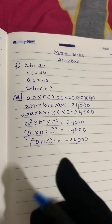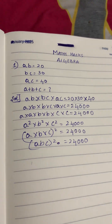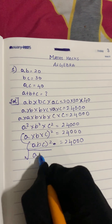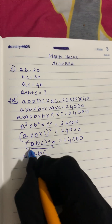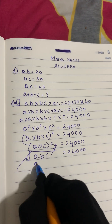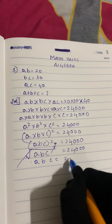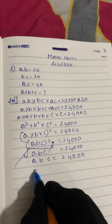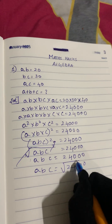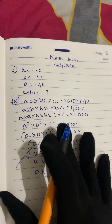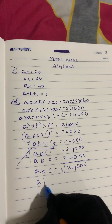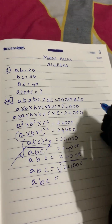Now abc² — since it is in square form, we take the square root of both sides. The square and square root cancel, so abc = √24,000. Now we have to find the square root of 24,000 by doing prime factorization (LCM method).